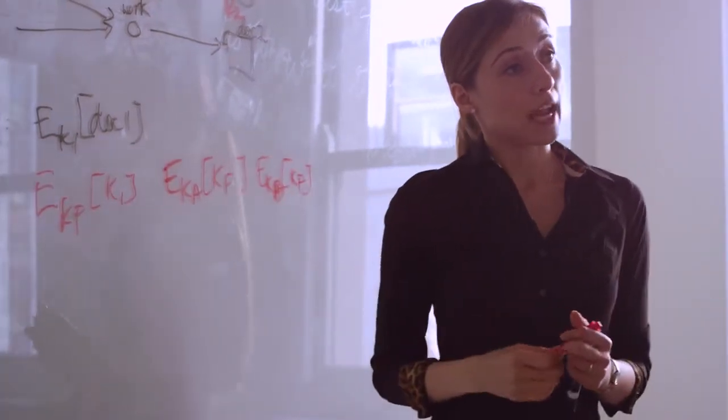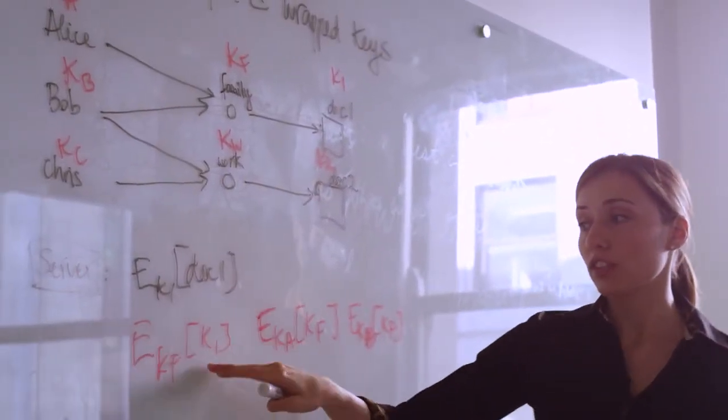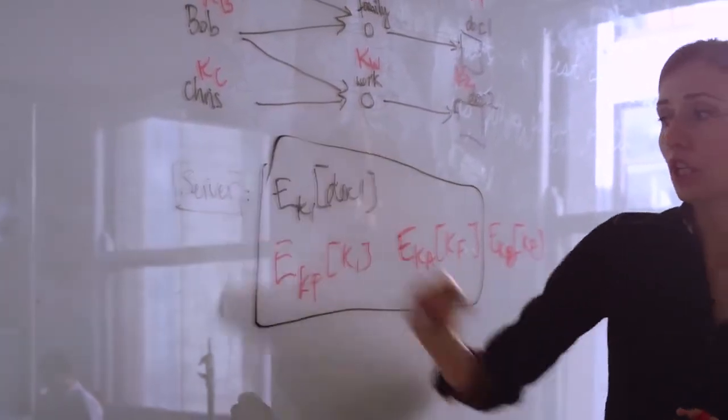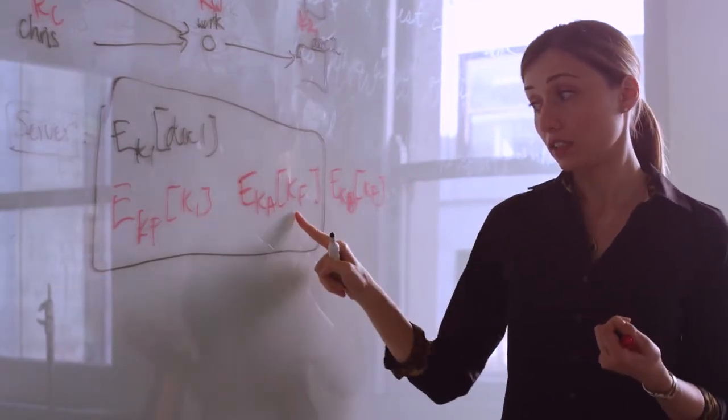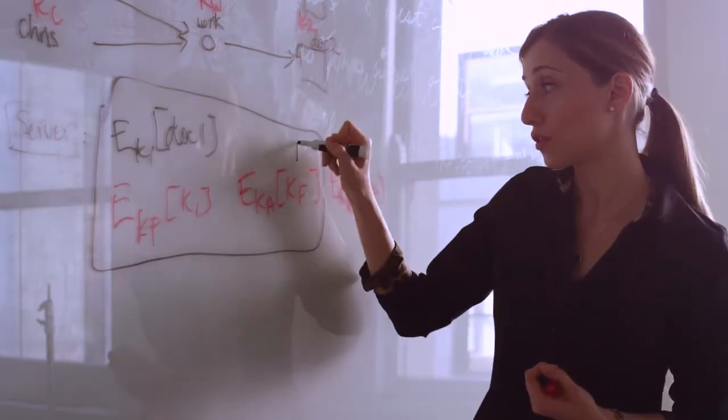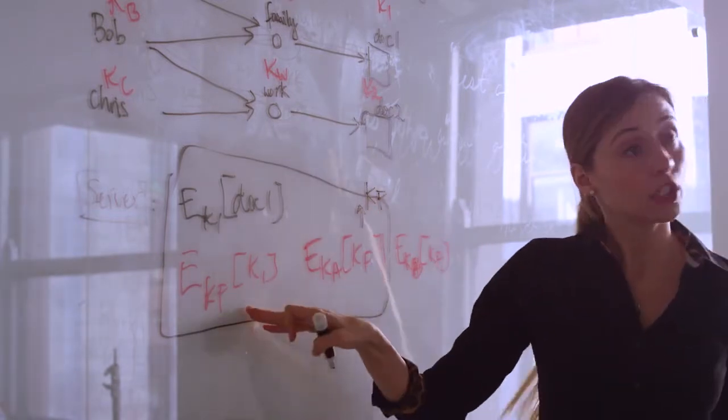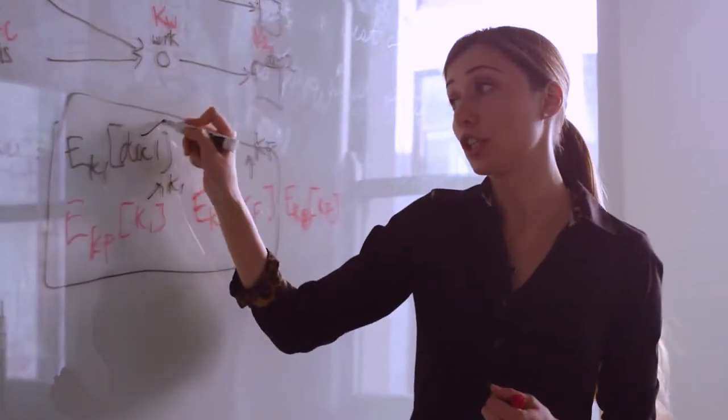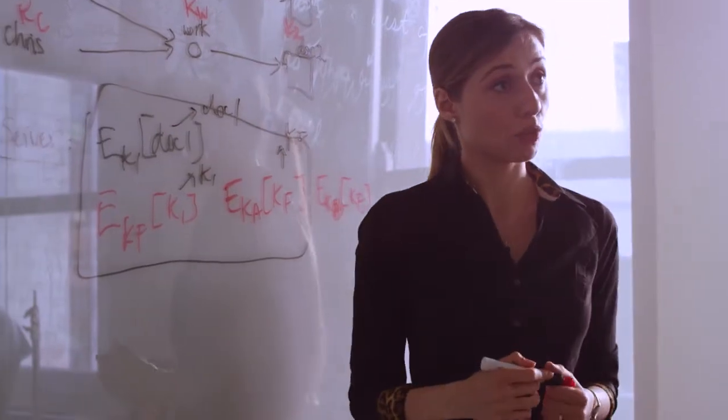So now when Alice comes online, how does she get access to this document? Well, she downloads the various relevant pieces of information. She uses Alice's key, her key, to obtain the key for the family by decrypting this quantity. So she can obtain key for the family. Then she uses the key for the family to decrypt K1. And with K1, she can finally decrypt document 1. So in this way, Alice was able to get access to her document.